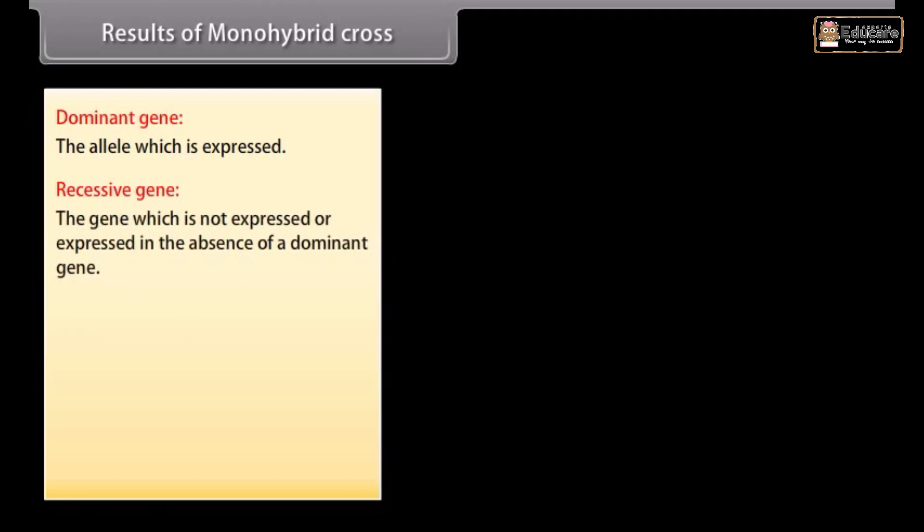Results of monohybrid cross. Dominant gene: The allele which is expressed. Recessive gene: The gene which is not expressed or expressed in the absence of dominant gene.